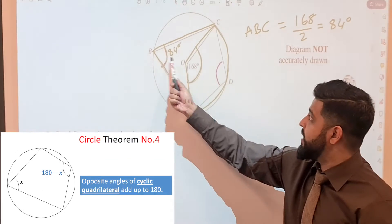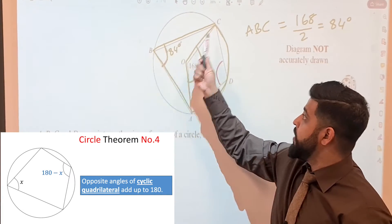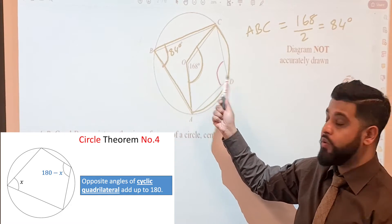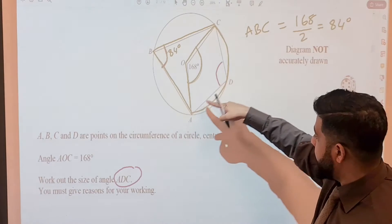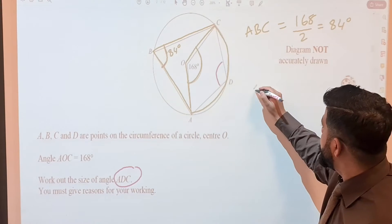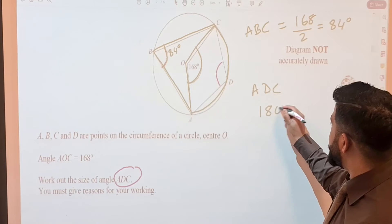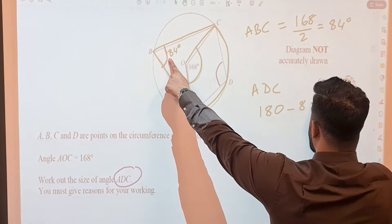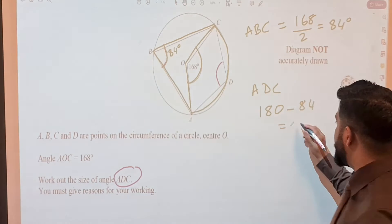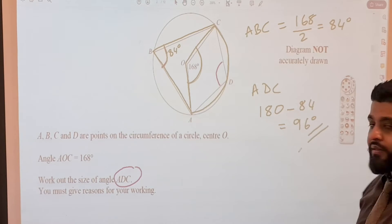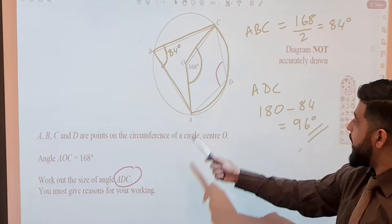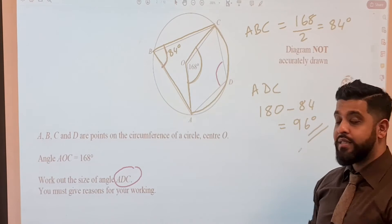So this angle here is 84. And earlier we said this is a cyclic quadrilateral, so therefore this angle plus this angle is equal to 180. So in order to find angle ADC, we do 180 minus the 84, and that gives us 96 degrees. So therefore angle ADC is 96 degrees.